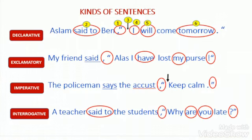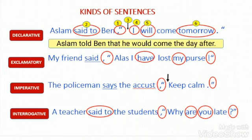Let us see examples according to the types of sentences. Declarative sentence — Direct speech: 'Aslam said to Ben, I will come tomorrow.' Applying all six rules: Rule 1 — remove commas and quotations. Rule 2 — change verb form: 'said to' becomes 'told.' Rule 3 — add conjunction 'that.' Rule 4 — change pronoun: 'I' into 'he.' Rule 5 — change tense: 'will' into 'would.' Rule 6 — change time adverbial: 'tomorrow' into 'the day after.' Result: 'Aslam told Ben that he would come the day after.'